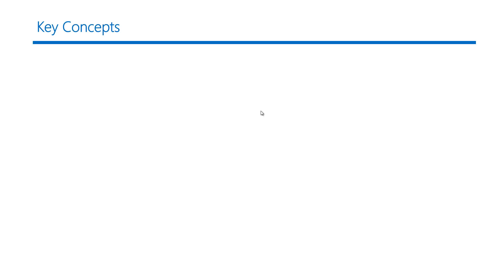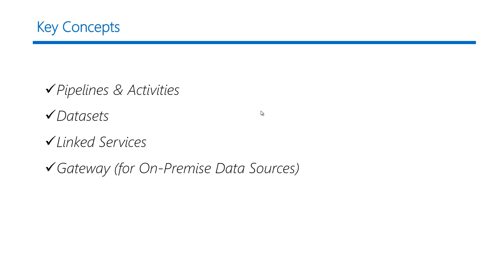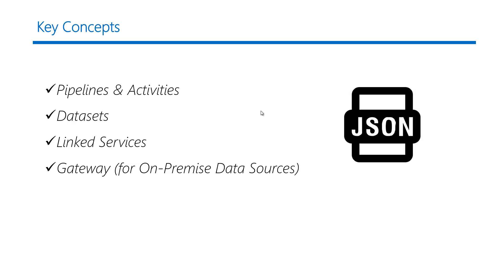We need to understand and define four key concepts: pipelines and activities, datasets, linked services, and gateway — but the gateway is only needed if you have an on-premise data store. The beauty is that all of them can be defined with the help of a simple JSON document.